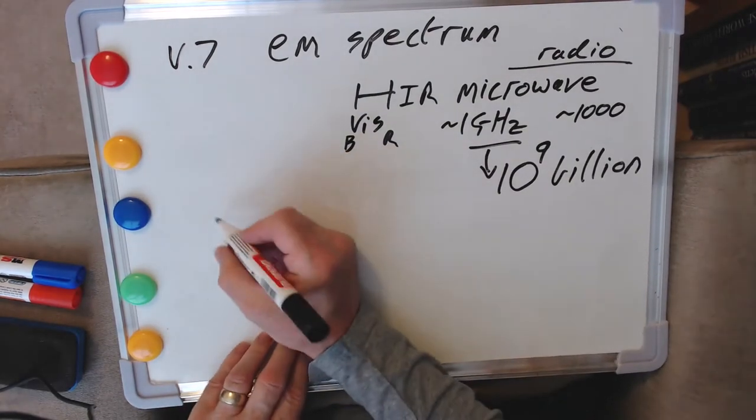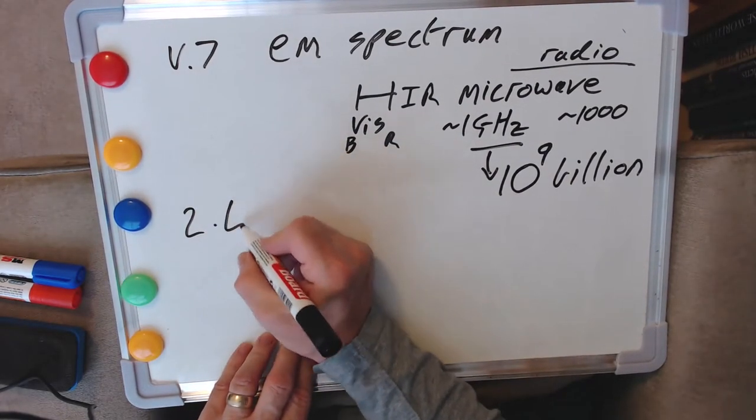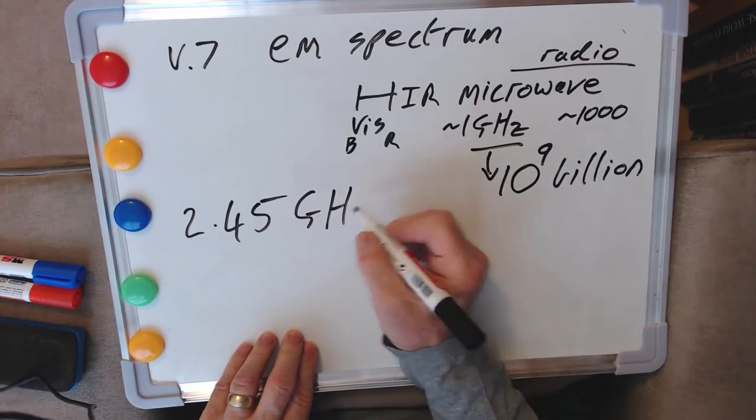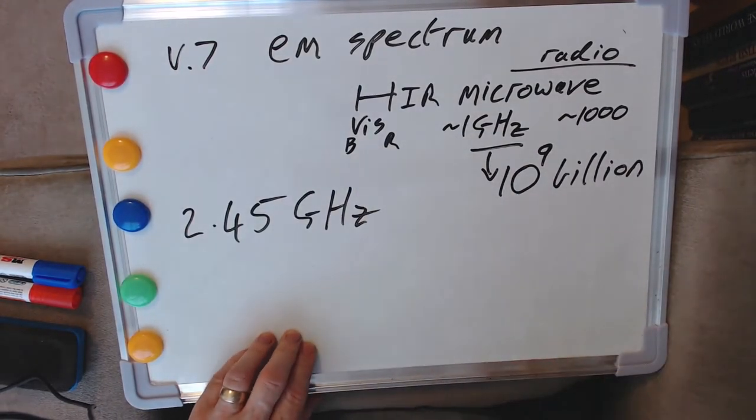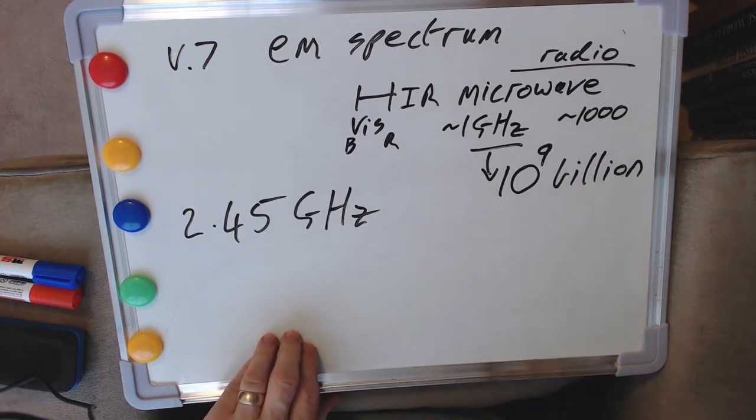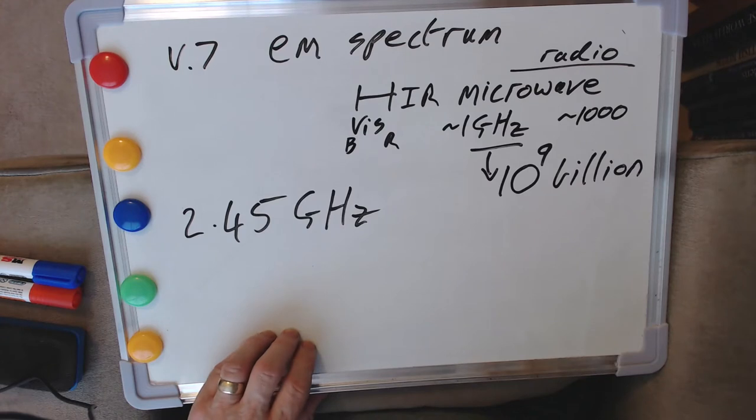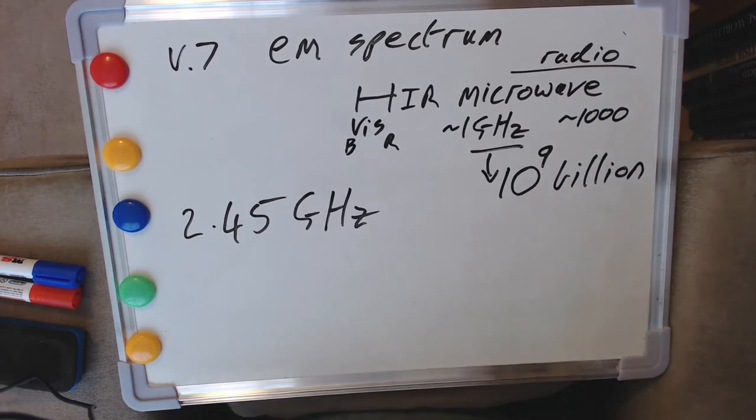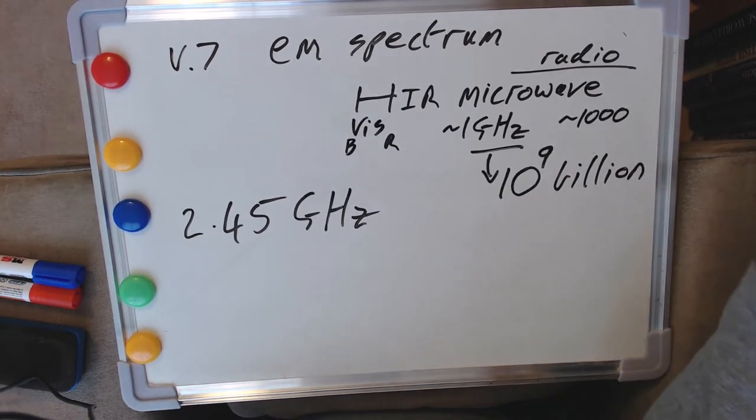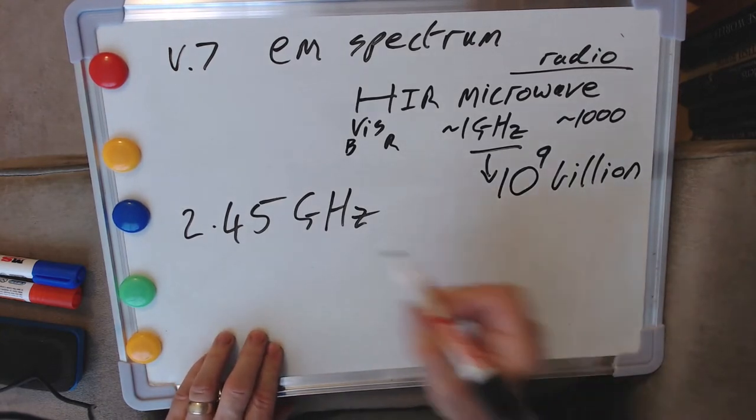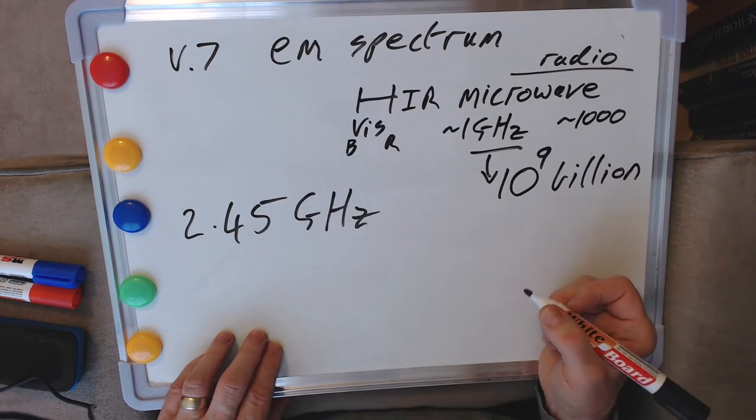But our microwave oven, and they're all pretty much in this area actually, work towards one end of this range. They work at 2.45 gigahertz and that's actually quite useful for us. We can do some interesting things with that.